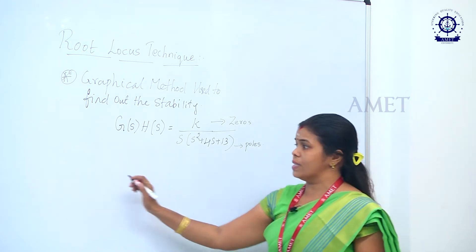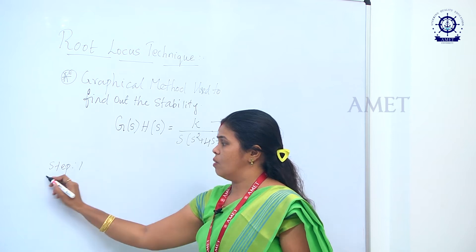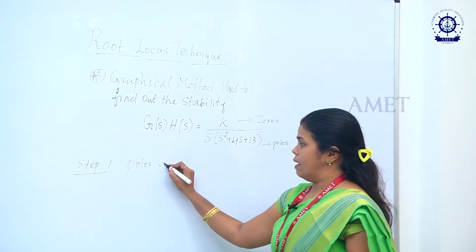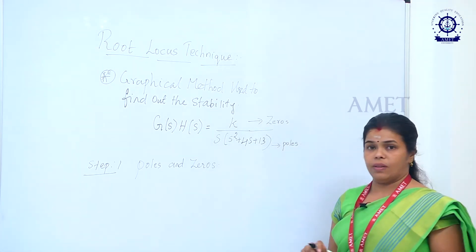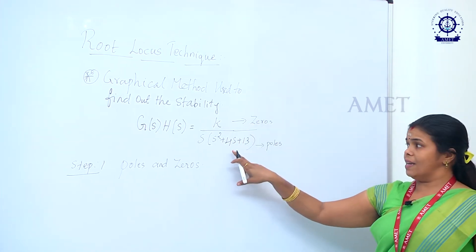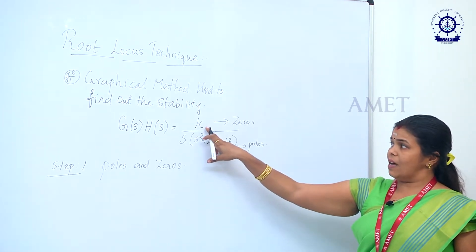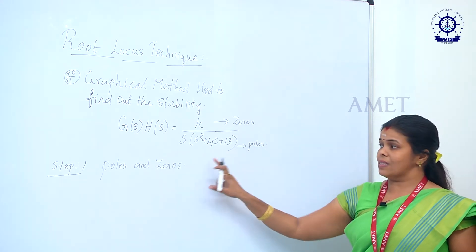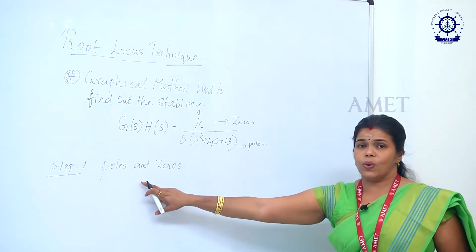The first step in the root locus technique is to find out how many poles and how many zeros are present in the open loop system. In this example, there are no zeros — only poles. So the first step is to find out the poles and zeros.